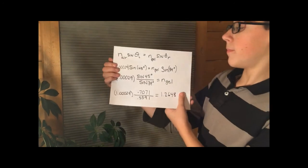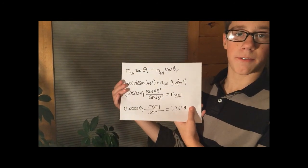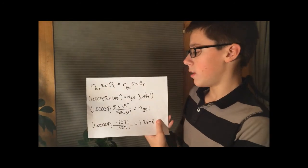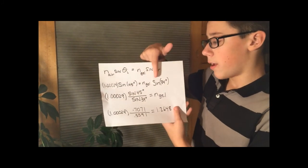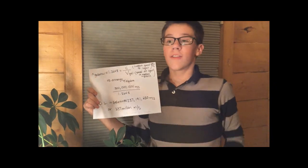The refraction index of air times sine of 35 degrees, our incident angle, equals the refraction index of gelatin, which is what we want to find out, times sine of 34 degrees. There! We can finally figure out the answer because we know the refraction index.